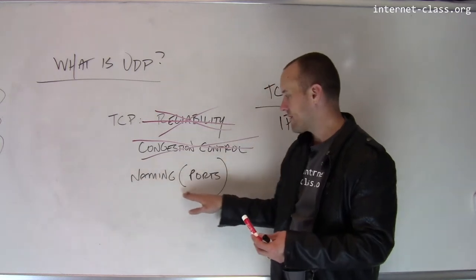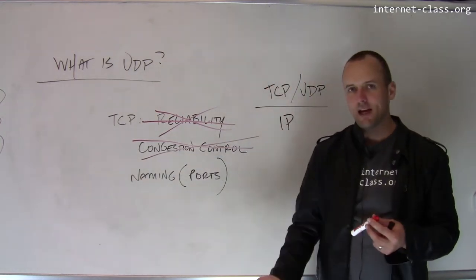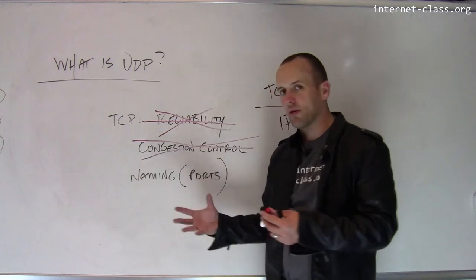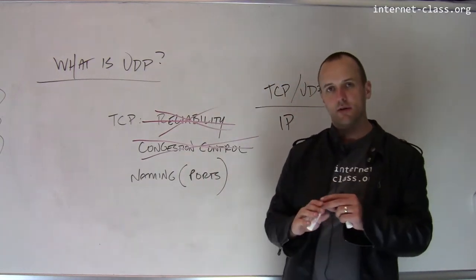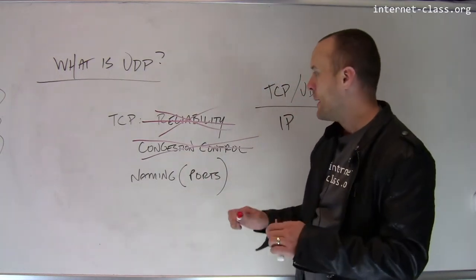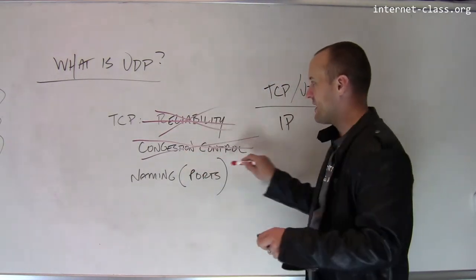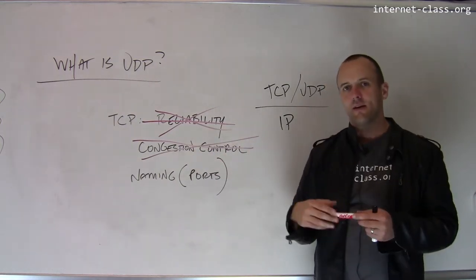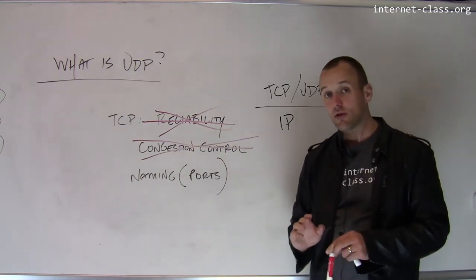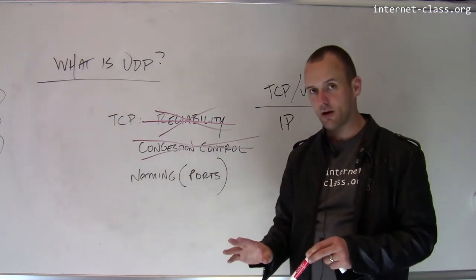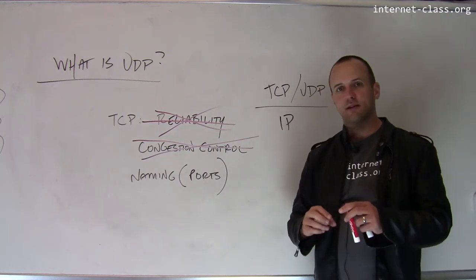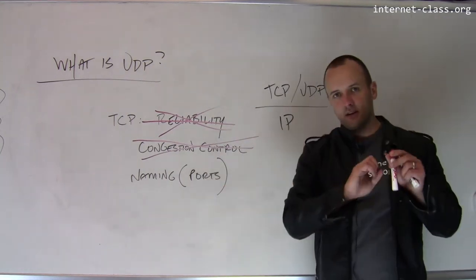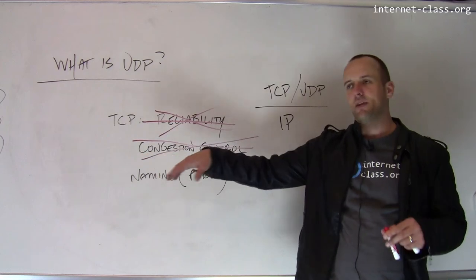The IP layer provides naming in the form of IP addresses. UDP adds naming in the form of ports, which is quite useful, but it doesn't try to provide any of the extra services that the TCP stack does. So UDP is a much, much simpler protocol — all it does is take the data, attach a port number to it, and send it out across the IP layer.